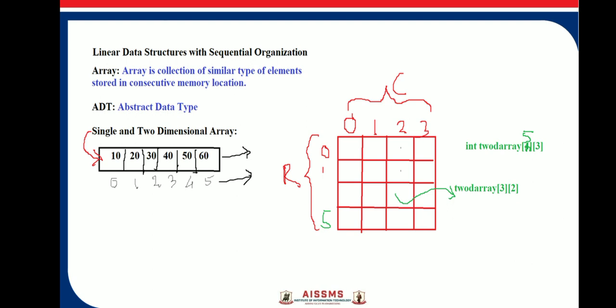We will consider arrays with single dimension and two dimensions. A one-dimensional array consists of only one row and a number of columns. Here 0, 1, 2, 3, 4, 5 are the locations of elements in the array. This is the single dimensional array.